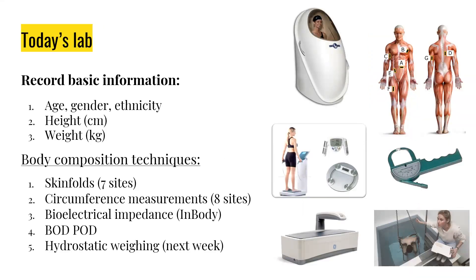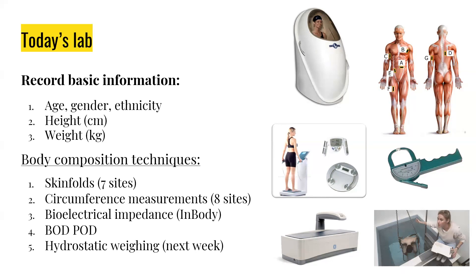For today's lab, we're going to be recording basic information: age, gender, ethnicity, height, and weight. These are important things we're going to record because it will be important for the data we input — for example, for the BOD POD, which uses predictive values for lung volume. The body composition techniques we're going to do are skin folds, circumferences, the in-body, the BOD POD, and a couple of you will do hydrostatic weighing.